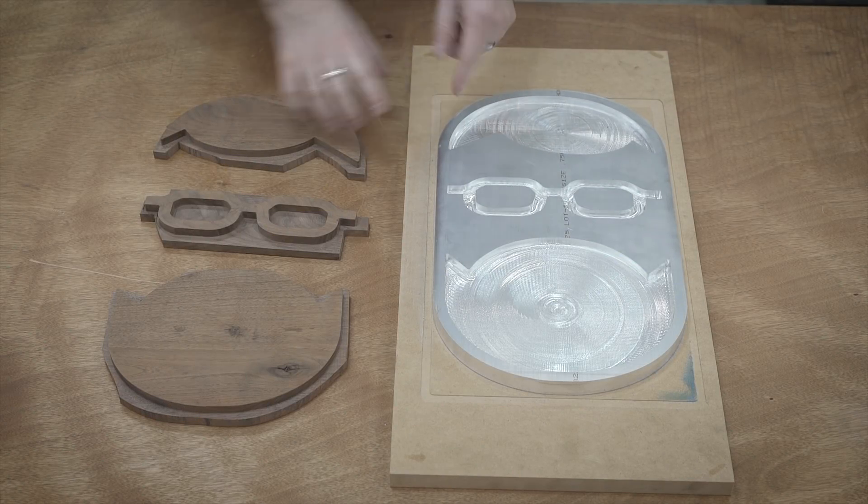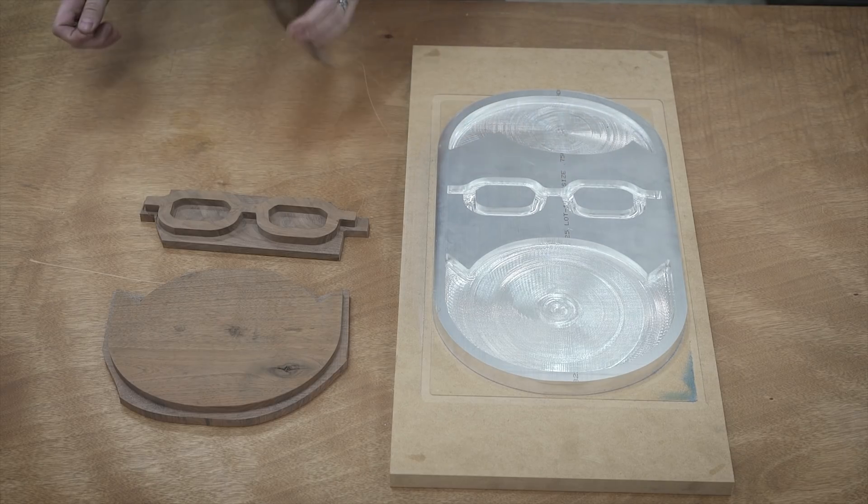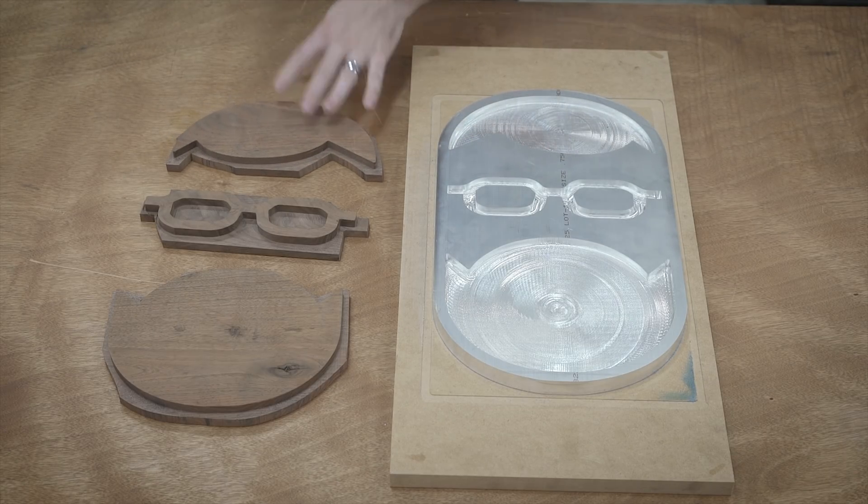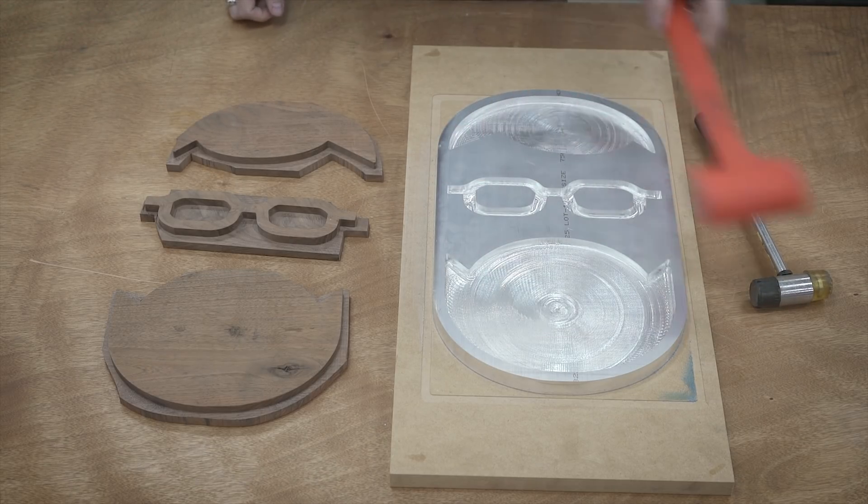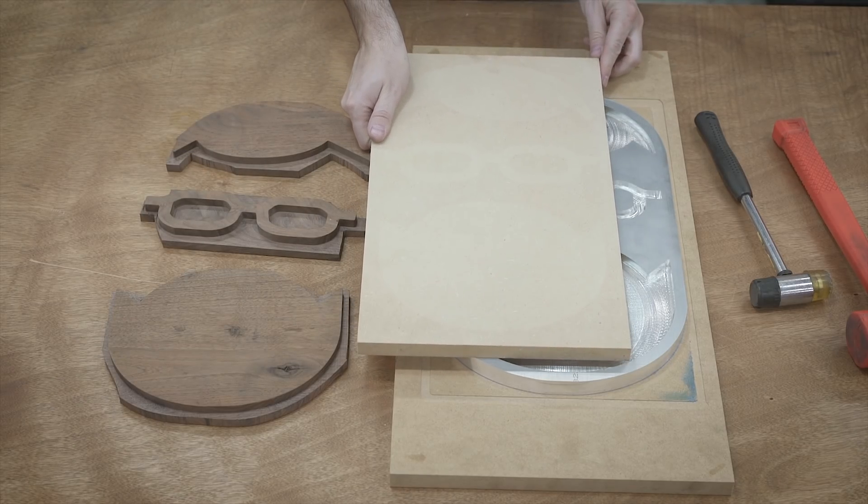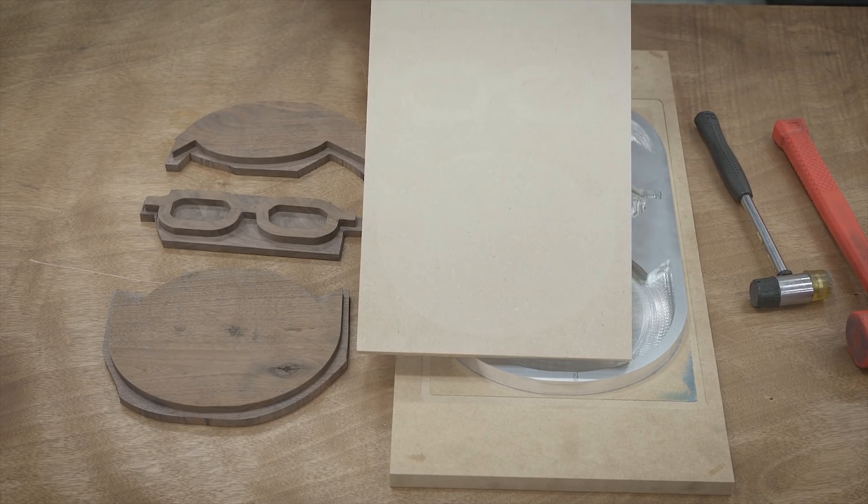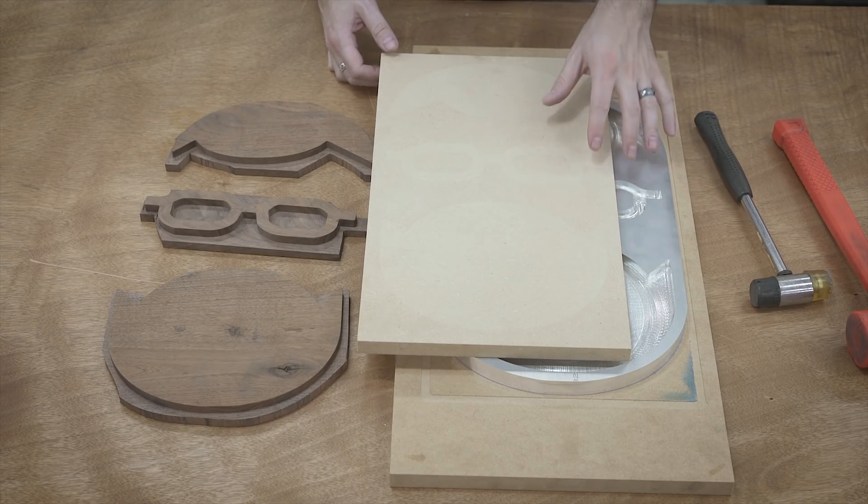So here comes the fun part. We actually get to tap these in. I've been waiting to do this for I guess weeks now. So pretty excited about that. I am just going to use a rubber hammer and then a dead blow. And spoiler alert, I've actually done this whole thing before. If you look very closely you can see that this is an inlay done out of MDF.